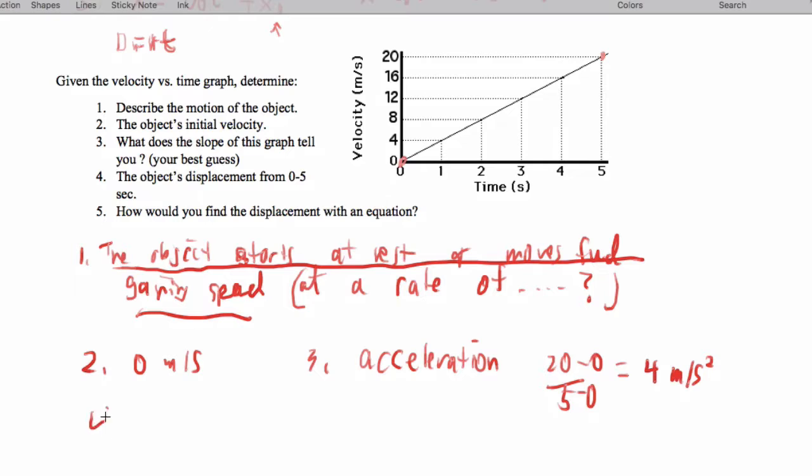And the object's displacement, we still use the area. It's a triangle. So that's going to be 1 half base times height, which is going to be 1 half, times 20, times 5, which ends up being 20 meters.